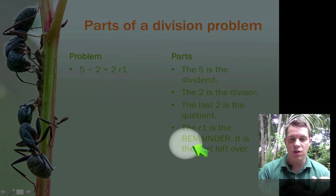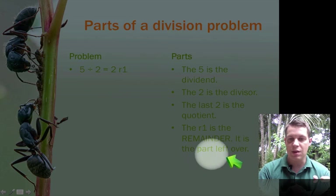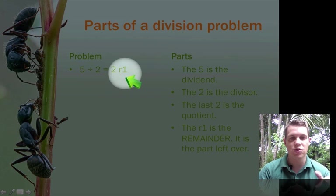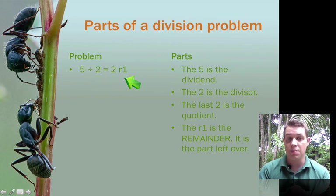But our new part is this R1. The R means remainder. And it is the part that's left over. So like in our previous problem, we saw there was one aphid left over. He is our remainder.